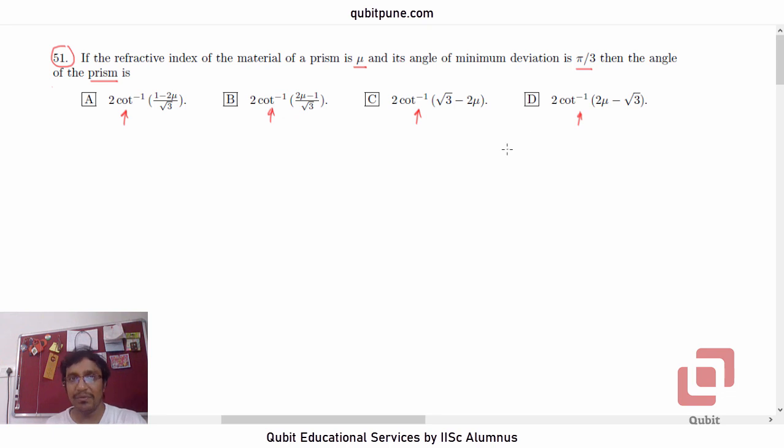The problem is very simple. You need to know the formula for prism. What is the formula? The refractive index μ is equal to sin of (A + δₘ)/2 divided by sin of A/2. This is the formula.